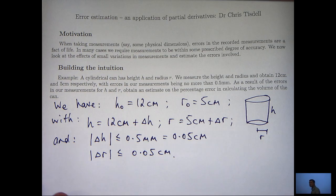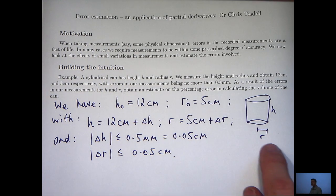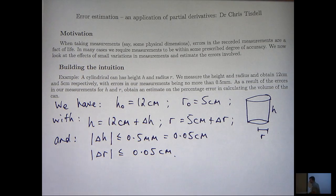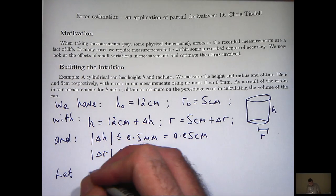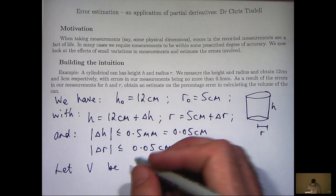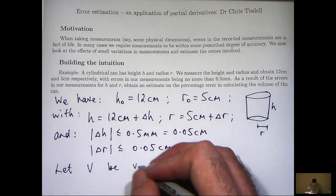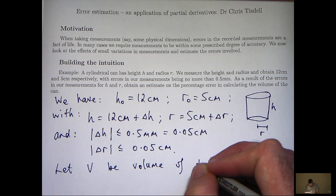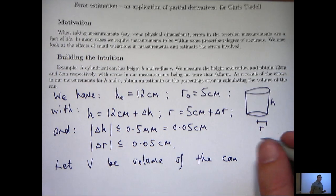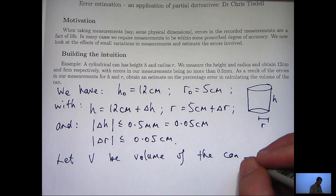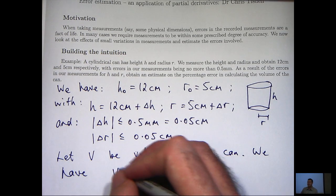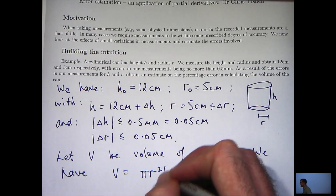Well, let's remind ourselves of the volume, how to calculate the volume for a cylindrical can. Well, let V be the volume of the can. We have the following: V = πr²h.